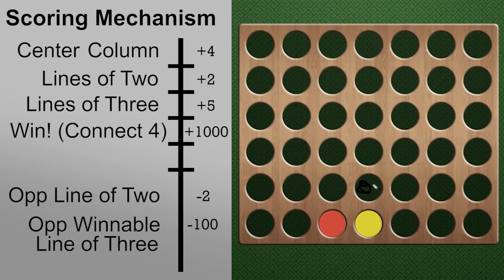That would give us a line of two upwards, as well as the bonus for dropping it in the center. So that would be a total of plus six. If we dropped it over here, then we have one diagonal direction, so that's going to be a plus two.